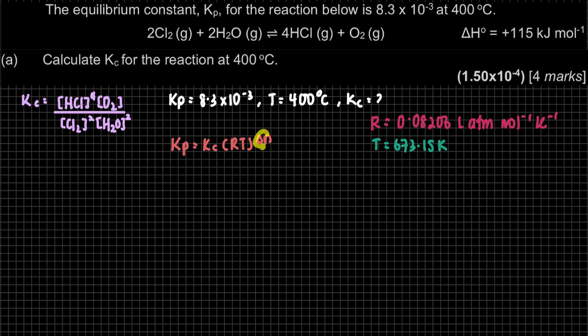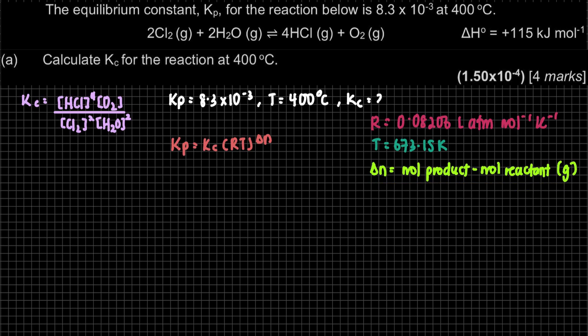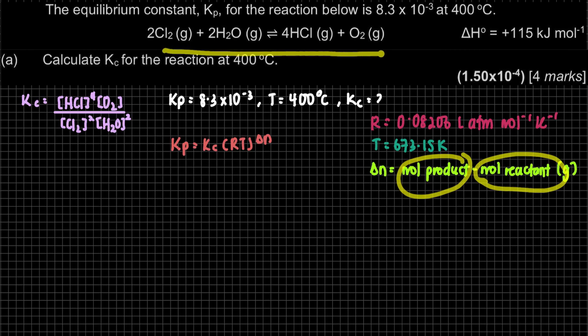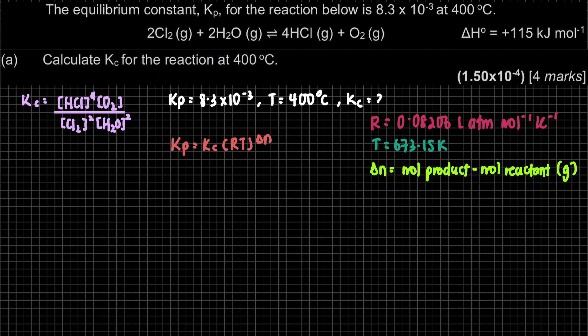Last but not least is ΔN. What is ΔN? ΔN is moles of product minus moles of reactant. The moles here are based on the stoichiometry coefficients from our balanced equation. For ΔN, we include only elements in the gas phase. For this equation, all species are in the gas phase, so we include all.